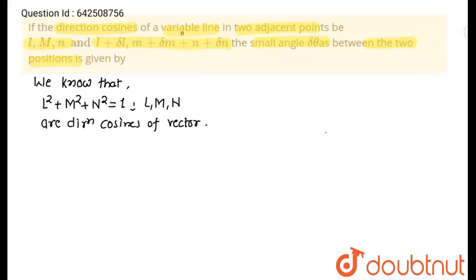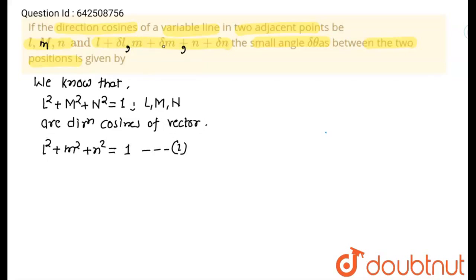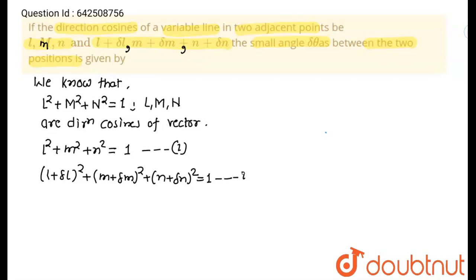There are direction cosines of a variable line at two adjacent points. The first position has direction cosines L, M, N and the second position has direction cosines L plus del L, M plus del M, and N plus del N. Since both are direction cosines: L squared plus M squared plus N squared equals 1 (equation 1), and (L + del L) squared plus (M + del M) squared plus (N + del N) squared equals 1 (equation 2).